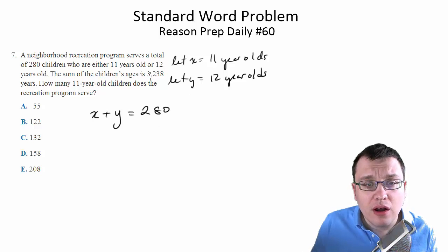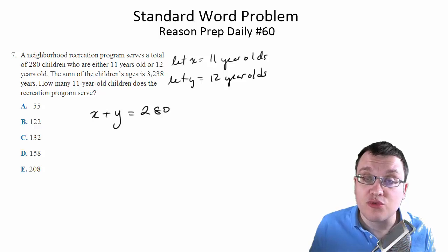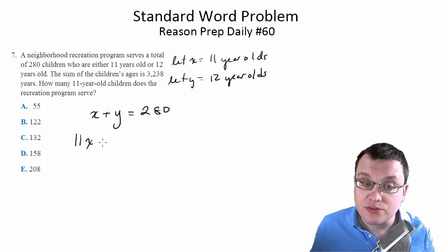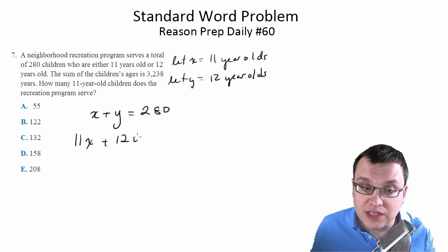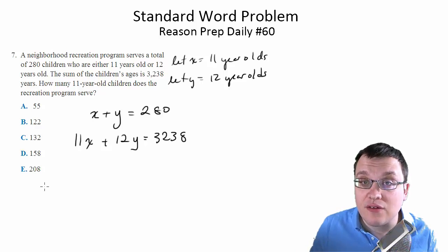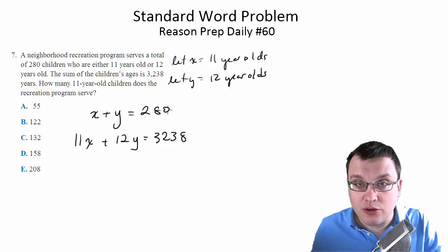And the sum of their ages is 3,238. So in other words, 11 times the number of 11-year-olds plus 12 times the number of 12-year-olds should give us 3,238. And now we have to solve this two equations, two unknowns as we normally would.